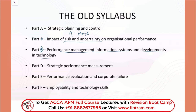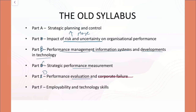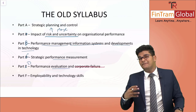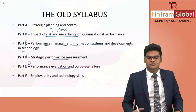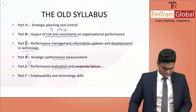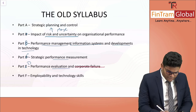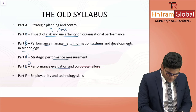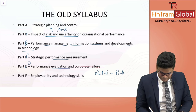The new Part B is Performance Management Information Systems and Developments in Technology. Part C would be Strategic Performance Measurement, and Part D would be Performance Evaluation. However, the topics in relation to corporate failure have been removed completely from the syllabus. Instead, we have a few other new topics which we will look at shortly. And finally, we still have Employability and Technology Skills, but we also have another Part E added to our syllabus, which is Professional Skills.